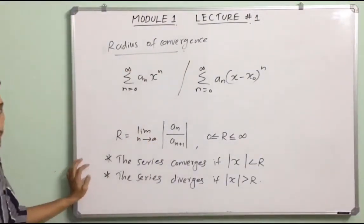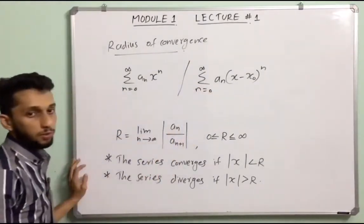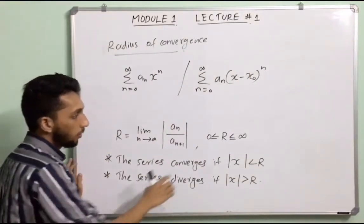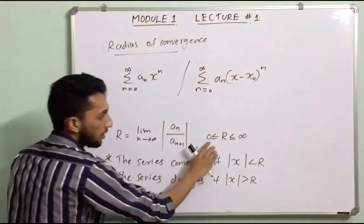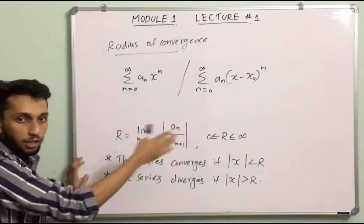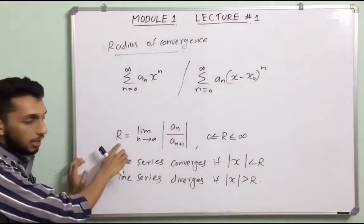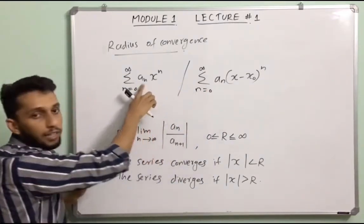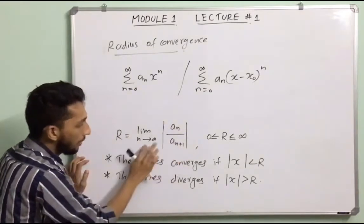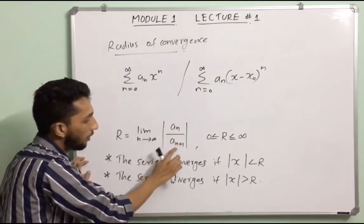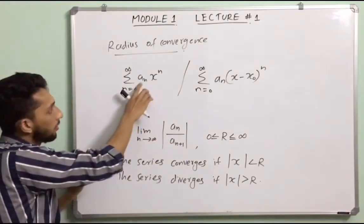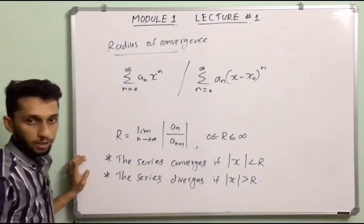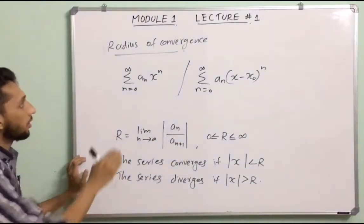Radius of Convergence: For a given power series, there exists a number R which is either 0, a positive real number, or infinity. This number R is defined as the limit as n tends to infinity of |aₙ / aₙ₊₁|. This number is the radius of convergence.